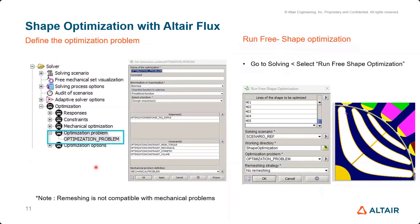The last step is defining the optimization problem. The objective is to minimize torque ripple, so select Minimize and choose the torque ripple response. For constraints, include the mean torque constraint, the mechanical stress constraint, the symmetry constraint, and the volume reduction constraint. Also define the mechanical problem when including mechanical optimization in shape optimization. Once done, all optimization options are fully defined.